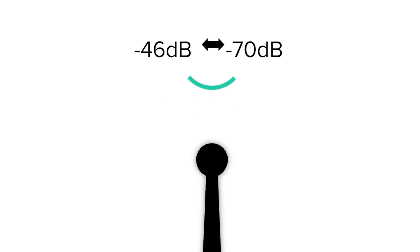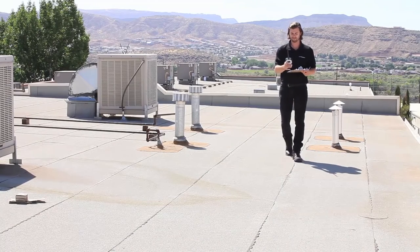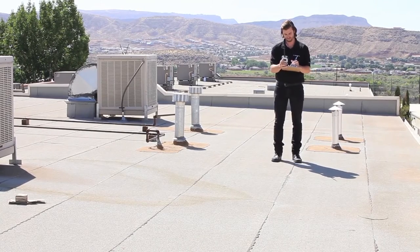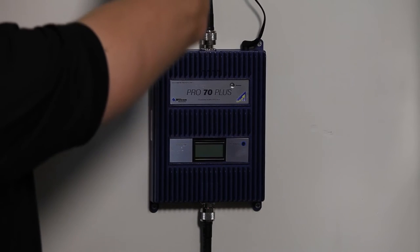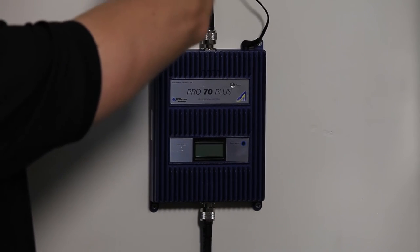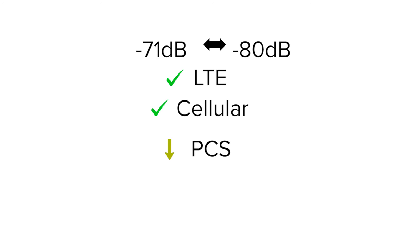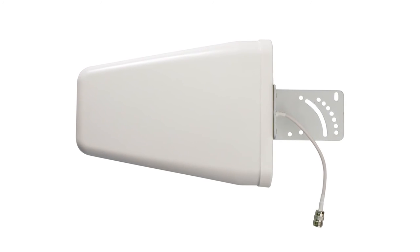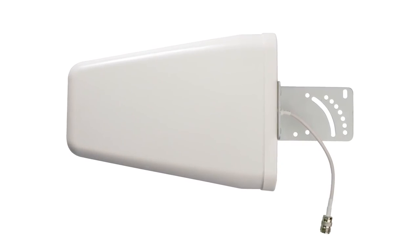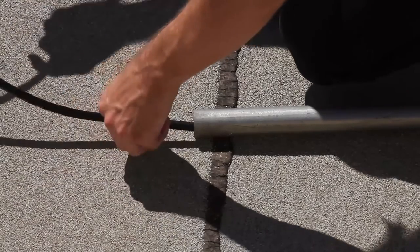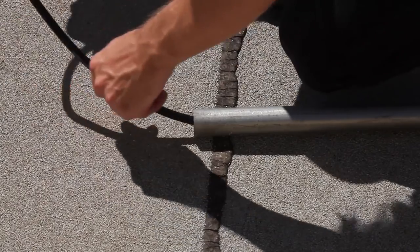Negative 46 to -70 dB is the sweet spot. If you're getting signal readings within this range, the booster will provide a strong signal and the amplifier will be working at maximum performance. Negative 71 to -80 dB is fine for LTE and cellular bands, but coverage for PCS and AWS bands begins to diminish here. Consider using a higher gain donor antenna like a Yagi directional, and keep cable runs at a minimum to limit signal loss.